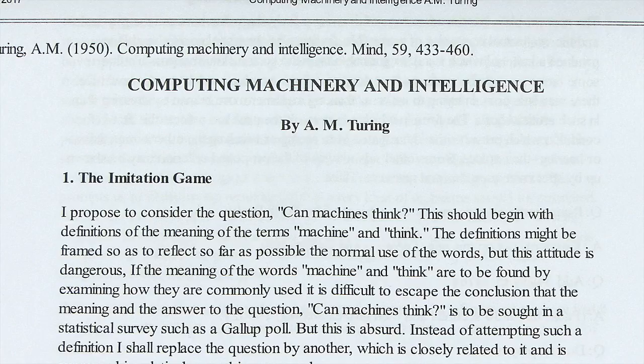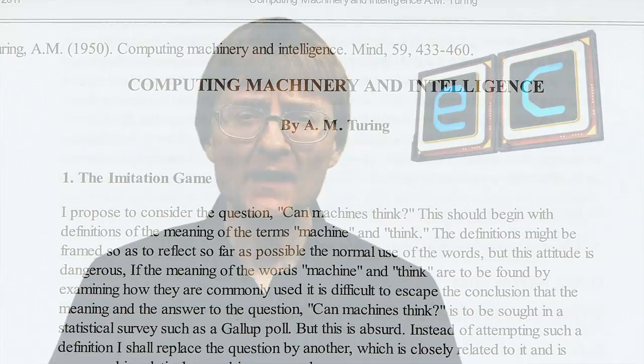Computing Machinery and Intelligence. And in this he proposed an experiment, what he called the imitation game, where you've got people communicating over a text-based interface. And he said if you could replace one of those people with a computer, and the other people didn't know they were communicating with a computer, not a person, then that machine would be deemed capable of what he called thinking, what we'd now call artificial intelligence.